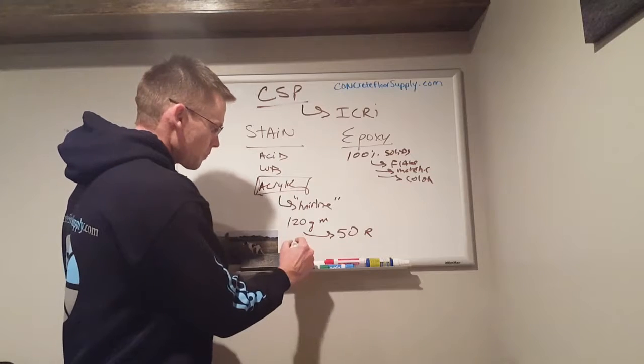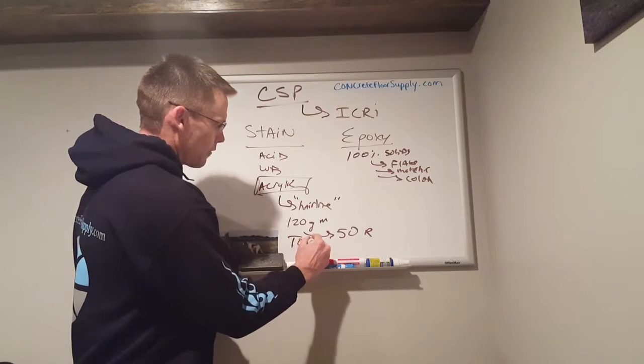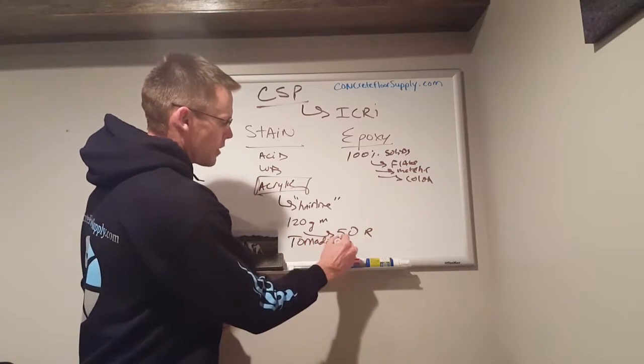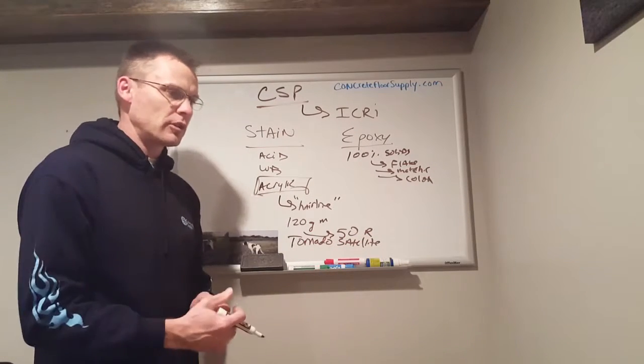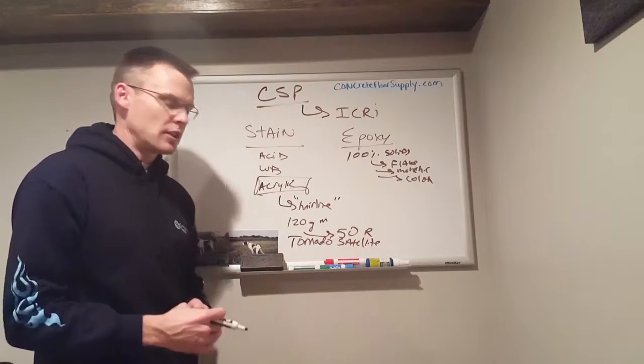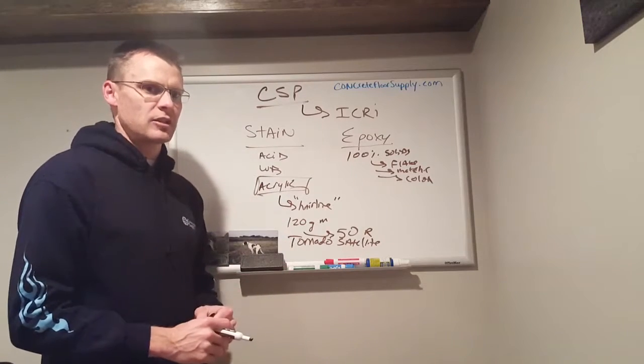So, to get that, we have a tornado satellite pad, very easy to use underneath the buffer. We have them in 30 and 50-grit, great, easy-to-use tool.